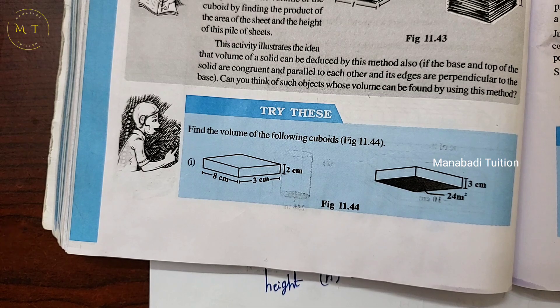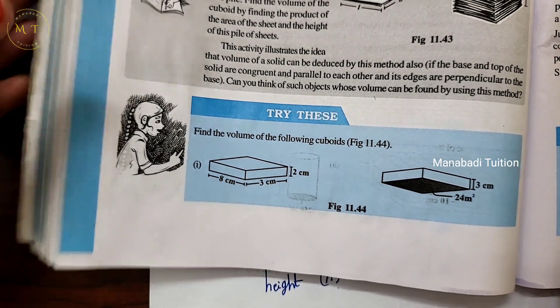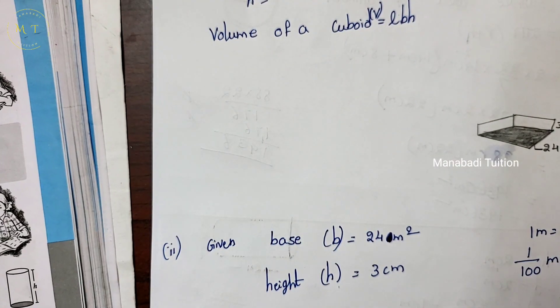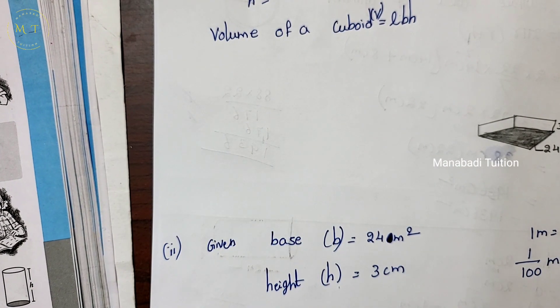The volume of a cuboid is L×B×H — length into breadth into height.